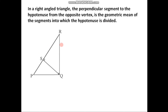To understand this, consider triangle PQR, which is a right angle triangle where angle Q is the right angle. In this triangle, QS is perpendicular to PR. We have to prove that QS is the geometric mean of the segments PS and SR, as QS divides the hypotenuse into these two segments.